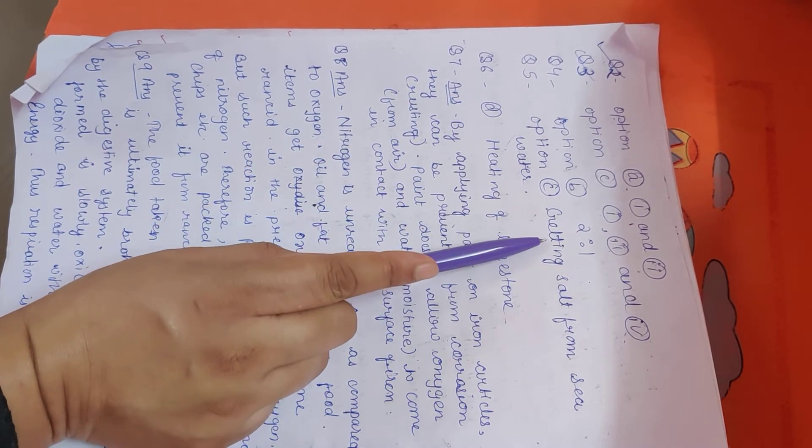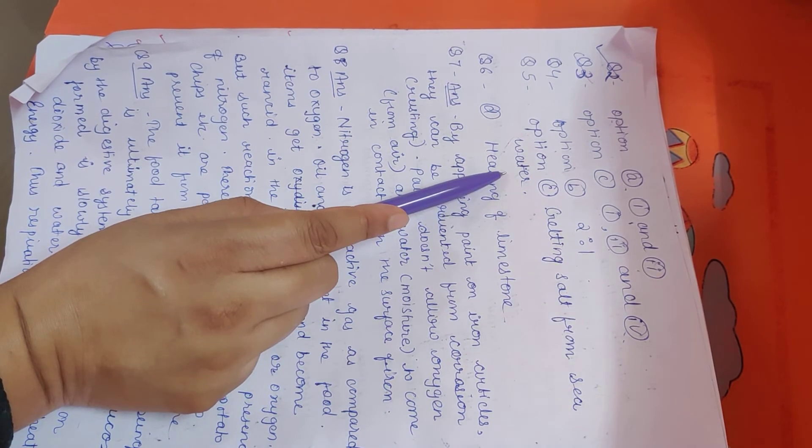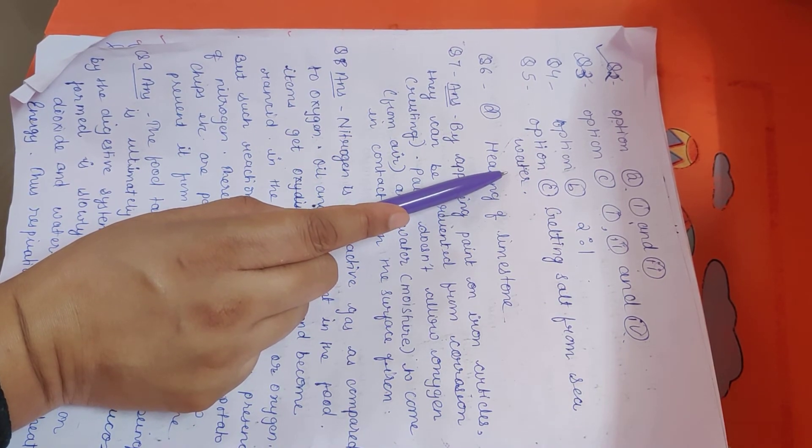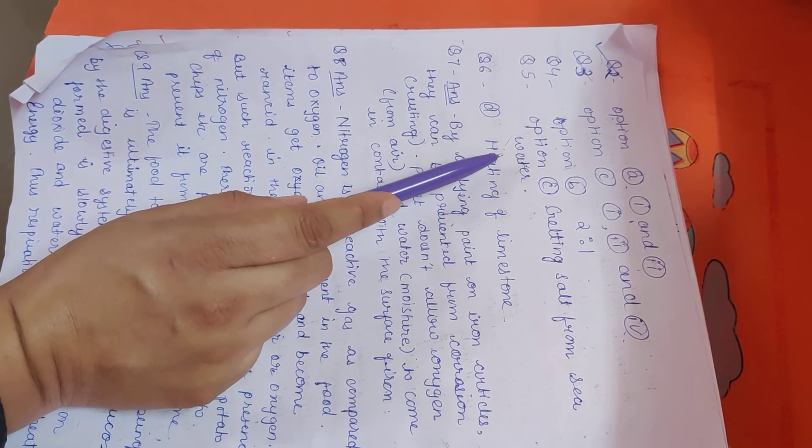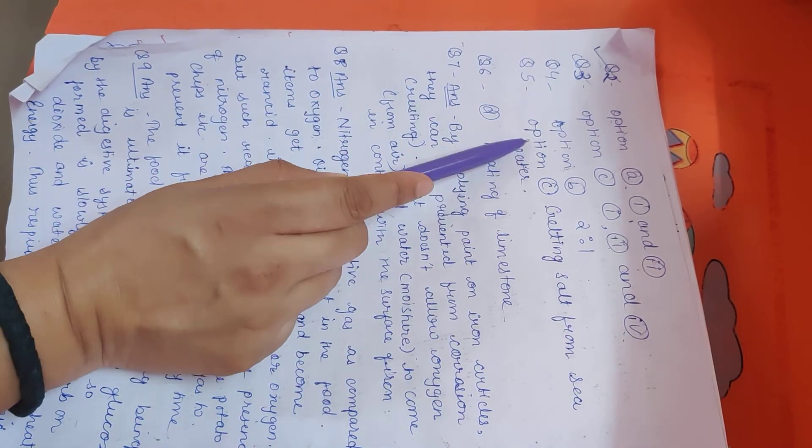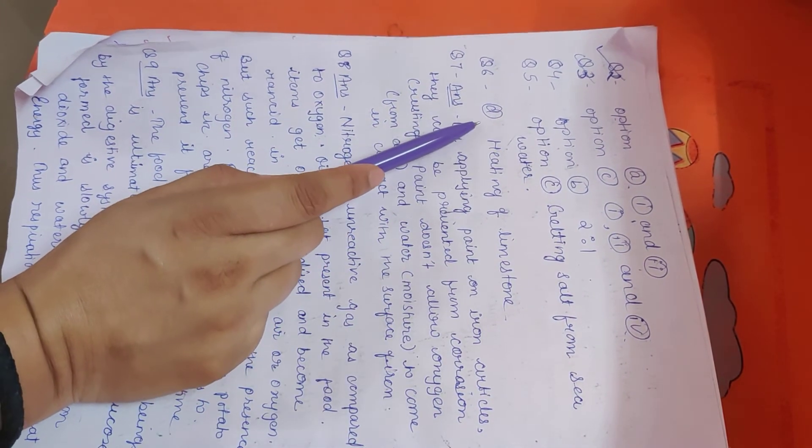So that is the correct option, that is option C, getting salt from seawater. Next is burning of wood, that is also irreversible change, so that was also not a physical change. So in question number 5, option C is the correct answer, that is getting salt from seawater.